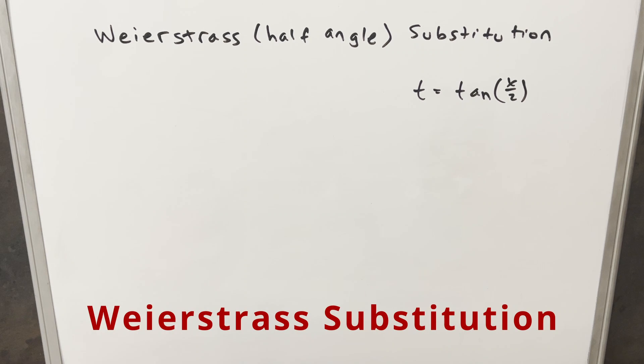I want to do something a little bit different today and derive the formulas for the half-angle substitution. And I will try to pronounce this even though my German isn't great, but I would say it's Weierstrass substitution.